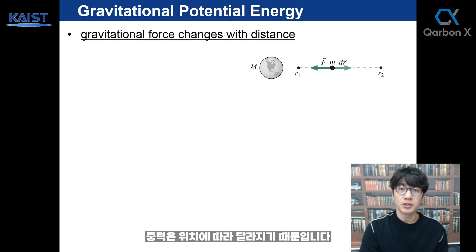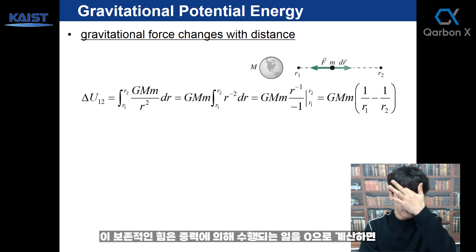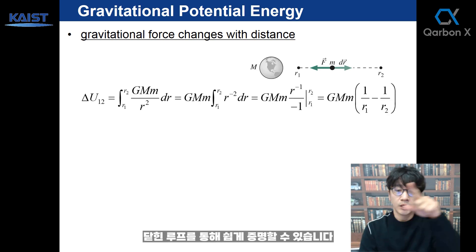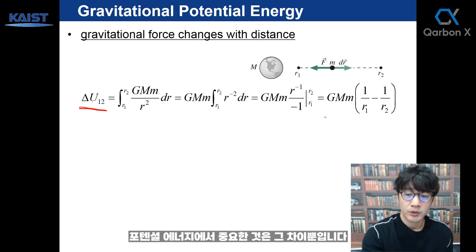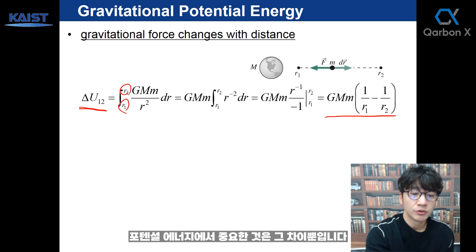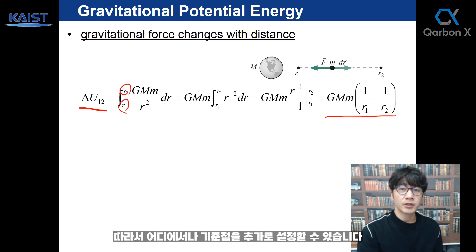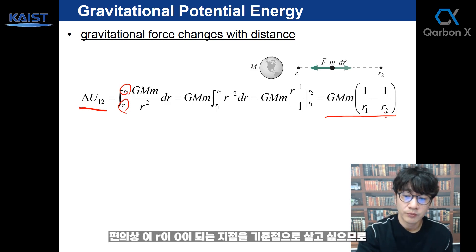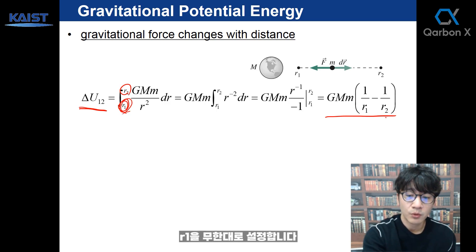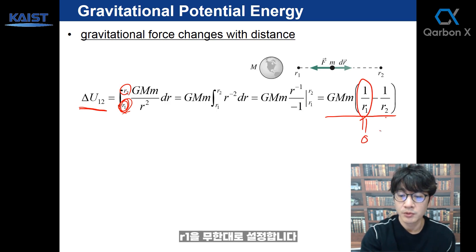Because gravitational force is position-dependent, it is a conservative force, which is easy to prove through a closed loop. If you calculate the work done by gravitational force, it's zero. So gravitational potential energy can be found from r1 to r2. The only thing that matters in potential energy is the difference, so we can set the reference point at any position for convenience.